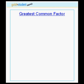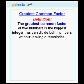In this tutorial, we will learn how to calculate the greatest common factor of two numbers. To begin, let's look at the definition. The greatest common factor of two numbers is the biggest integer that can divide both numbers without leaving a remainder.